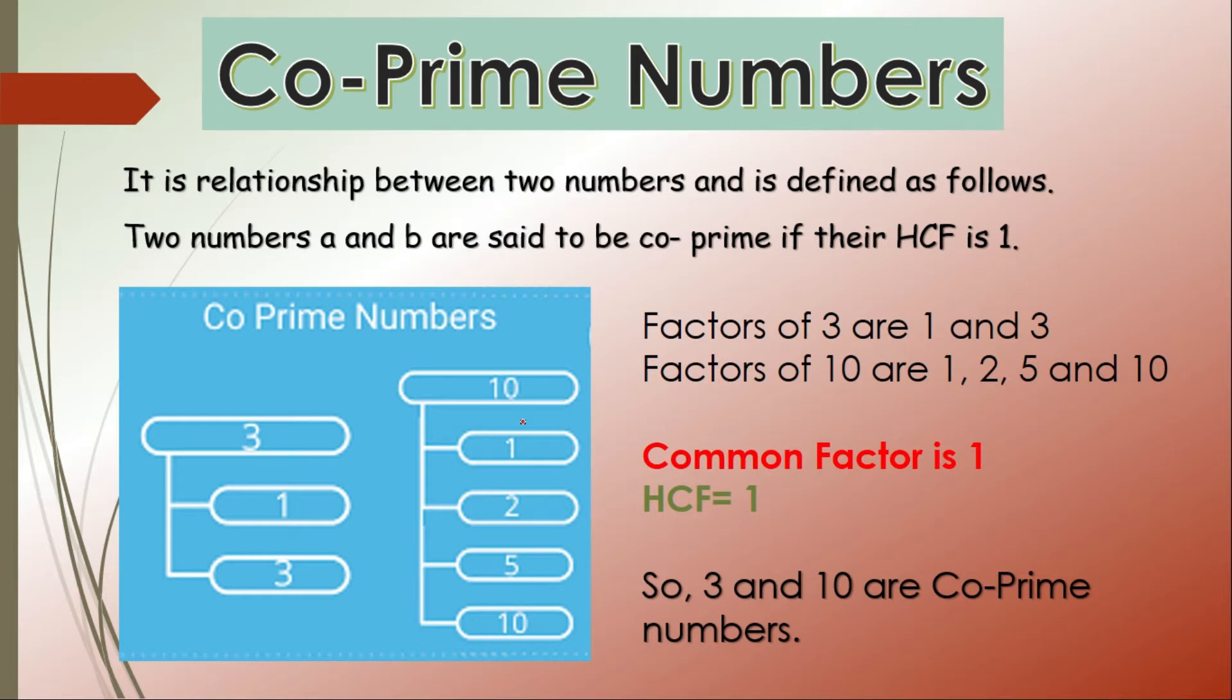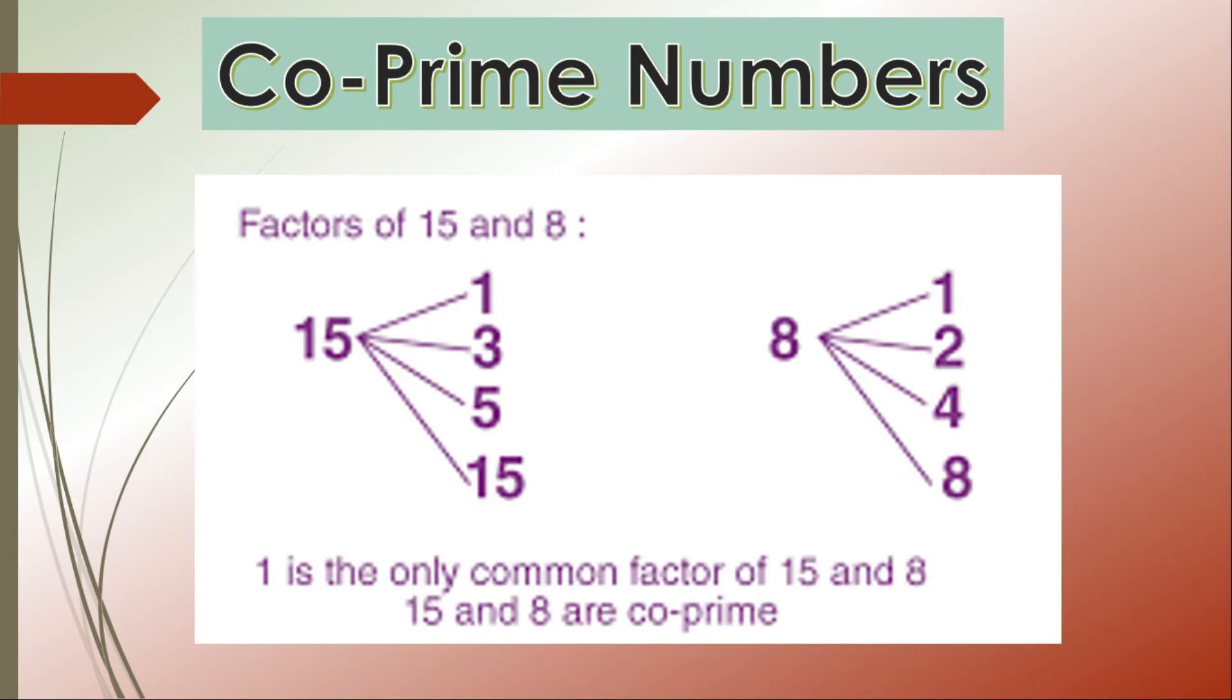Let us see through one more example. Here I have taken two numbers, 15 and 8. Both are composite but still they are co-prime. Why? Because of their common factors. The factors of 15 are 1, 3, 5, and 15. The factors of 8 are 1, 2, 4, 8. They both are composite, but still only 1 is the common factor between 15 and 8. So 15 and 8 are also known as co-prime numbers.